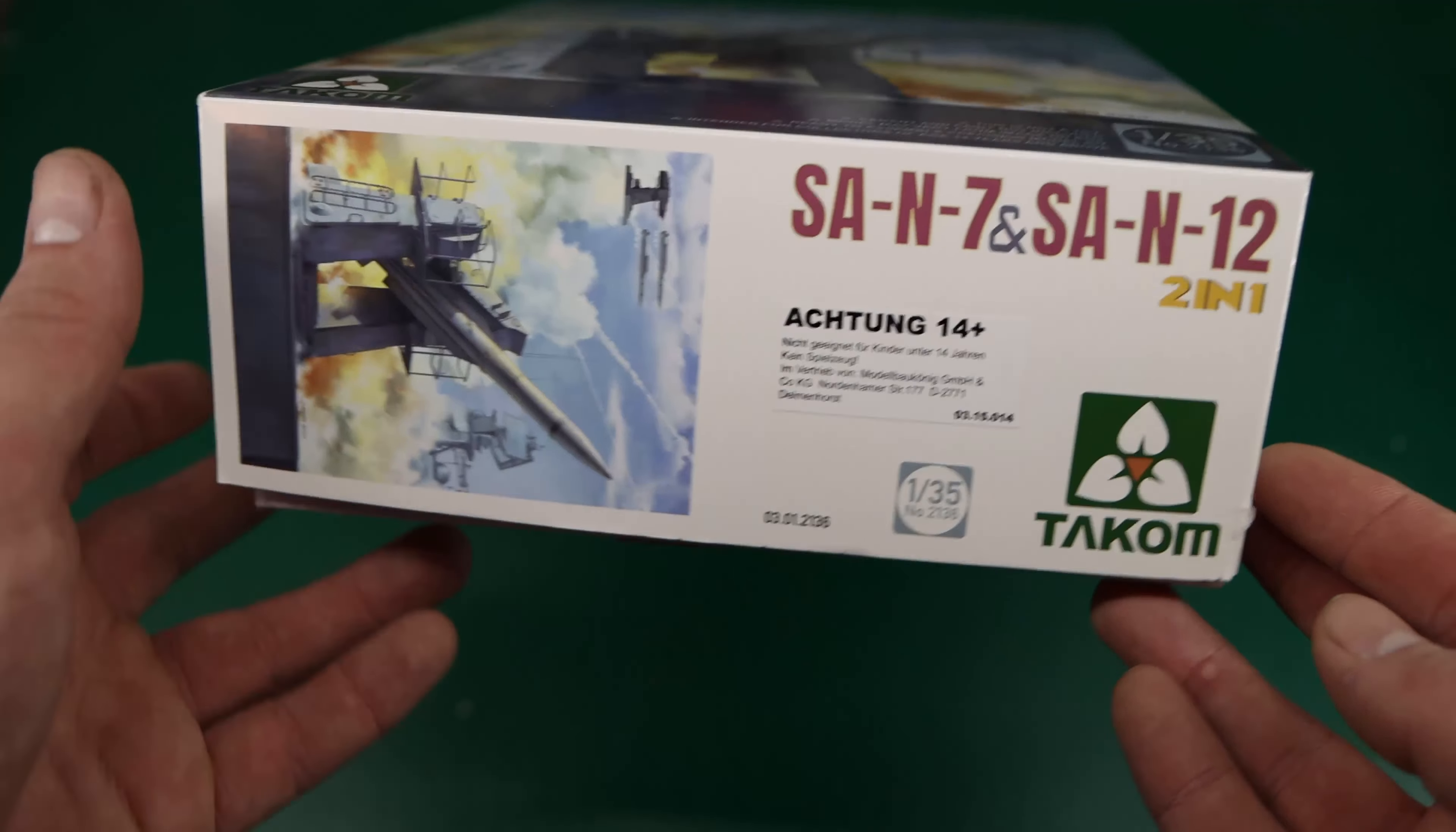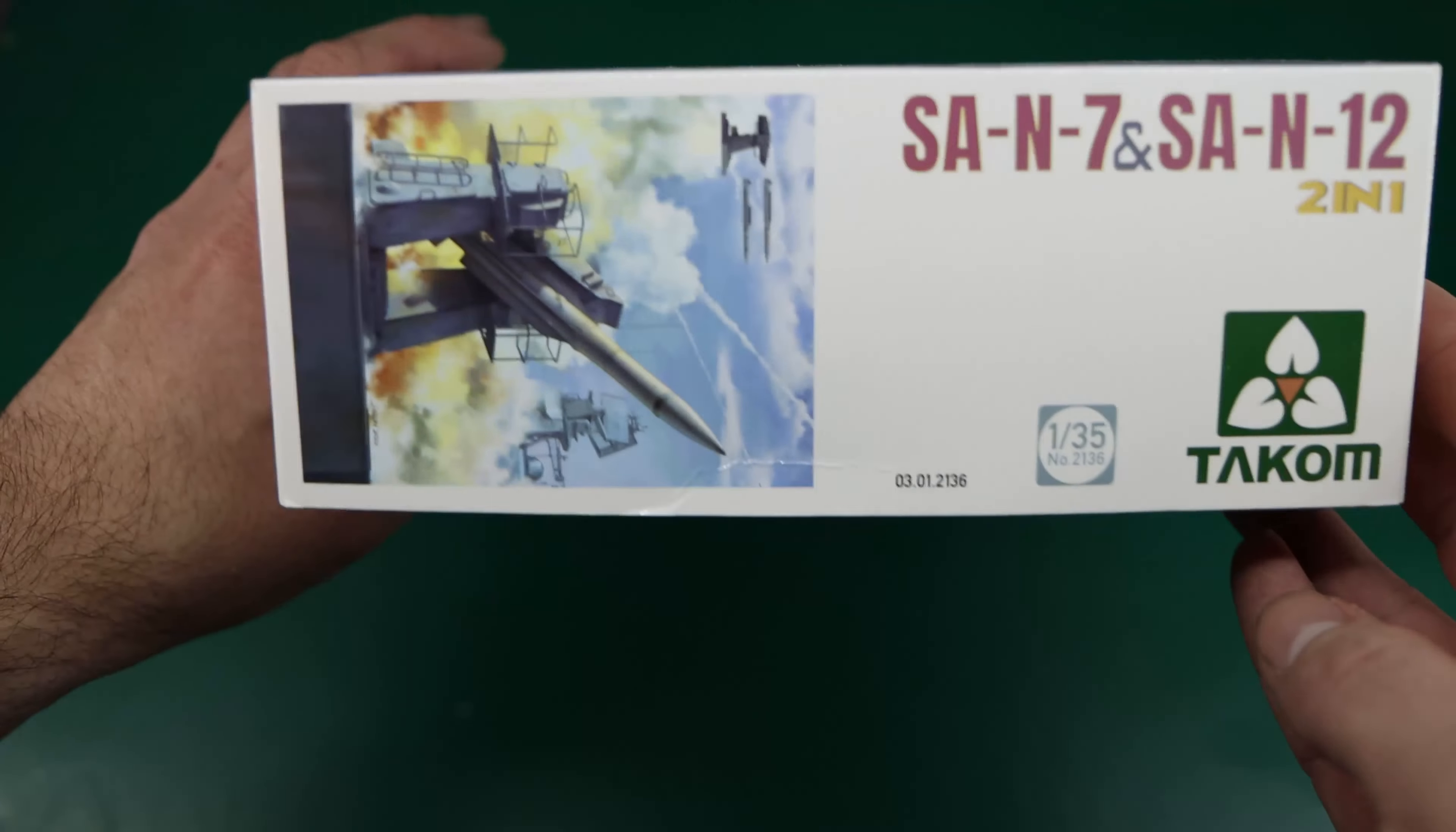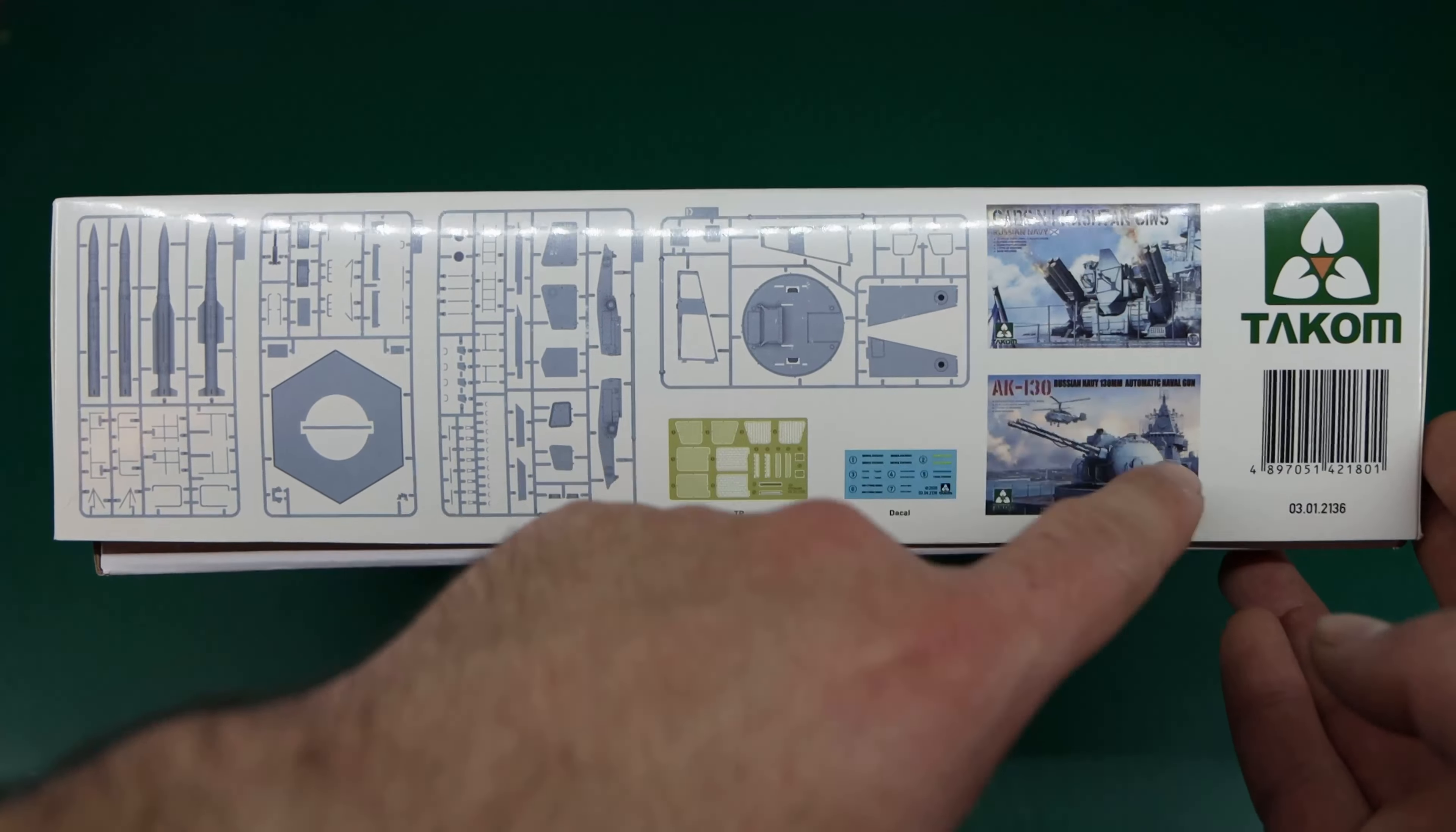If we flip to the side you can see some of the same art. This side shows the launcher itself as well as the two missiles. The other end is the same thing, and on the end of the box they have the sprue layout and show you a couple other models.